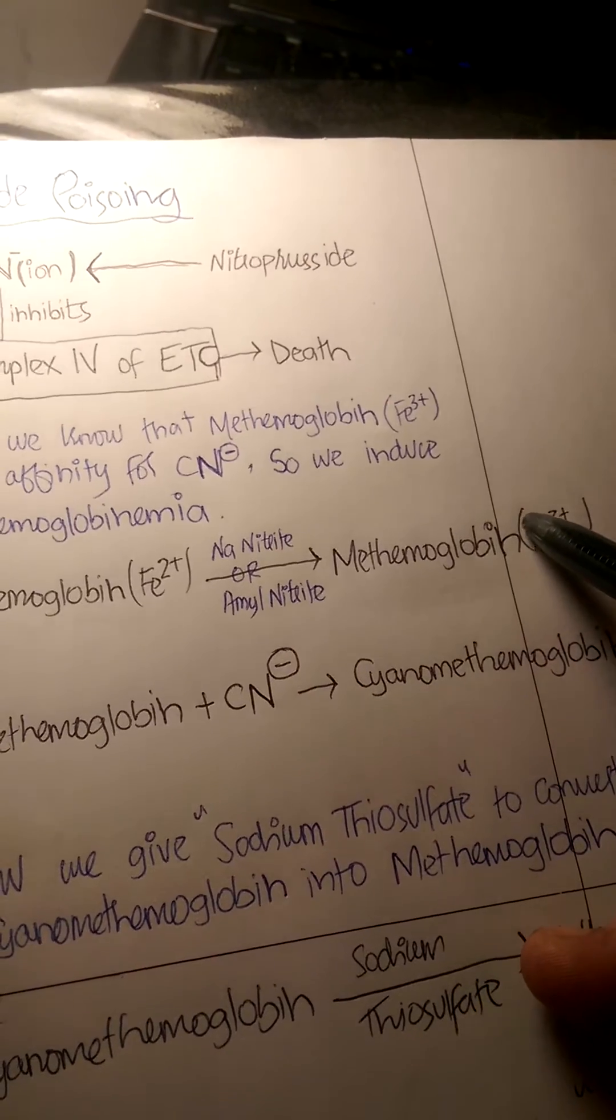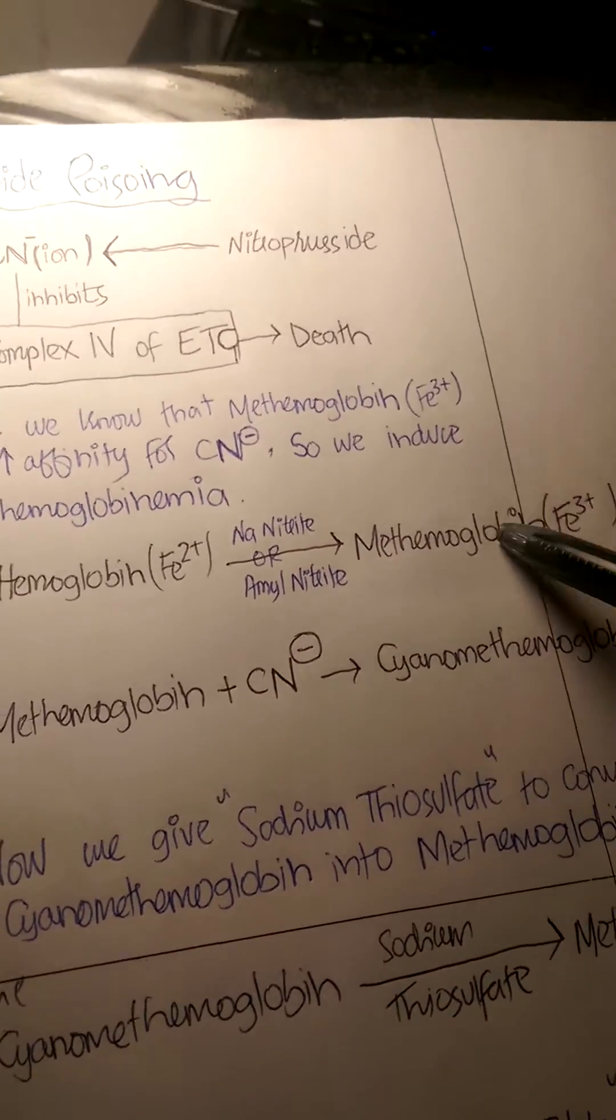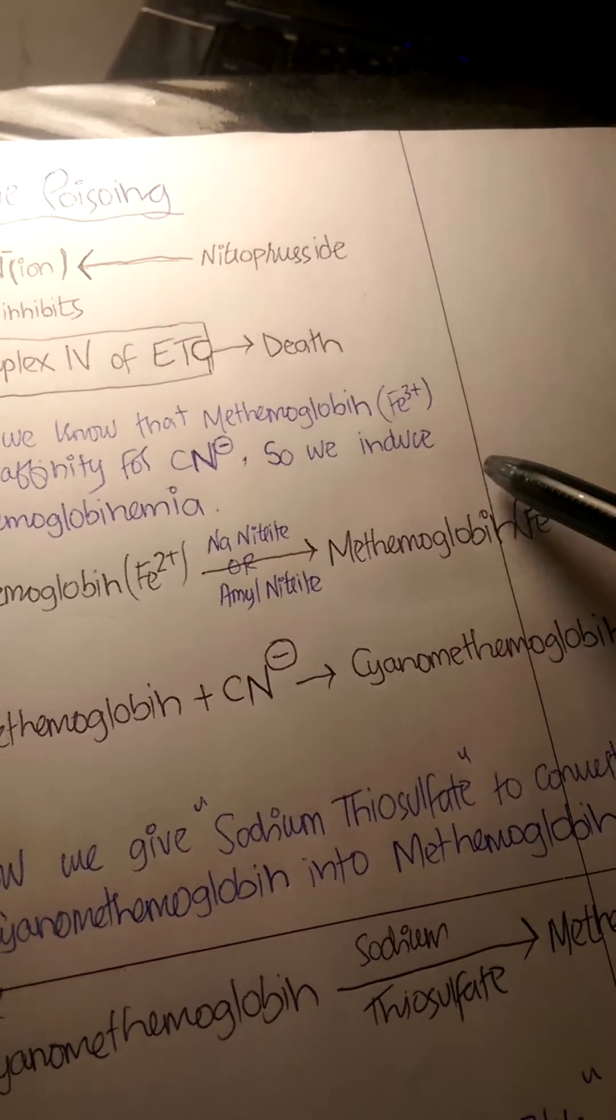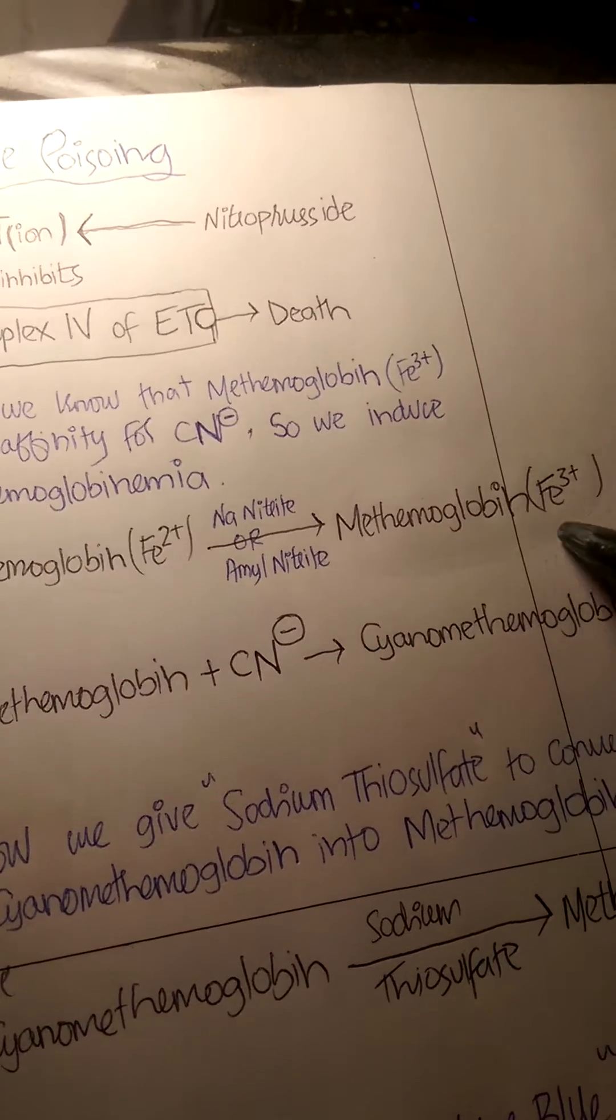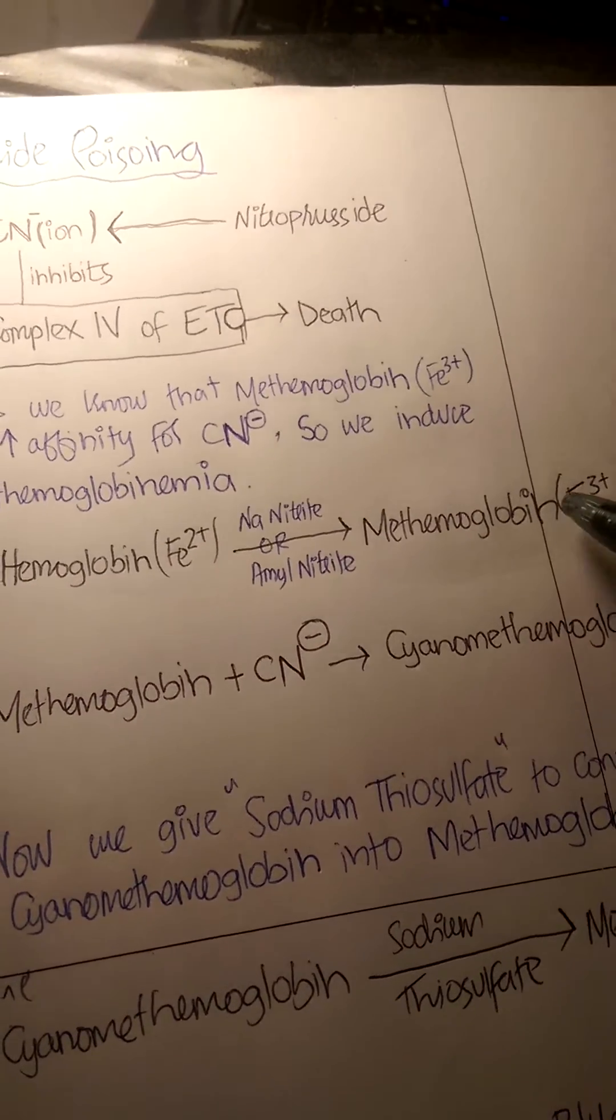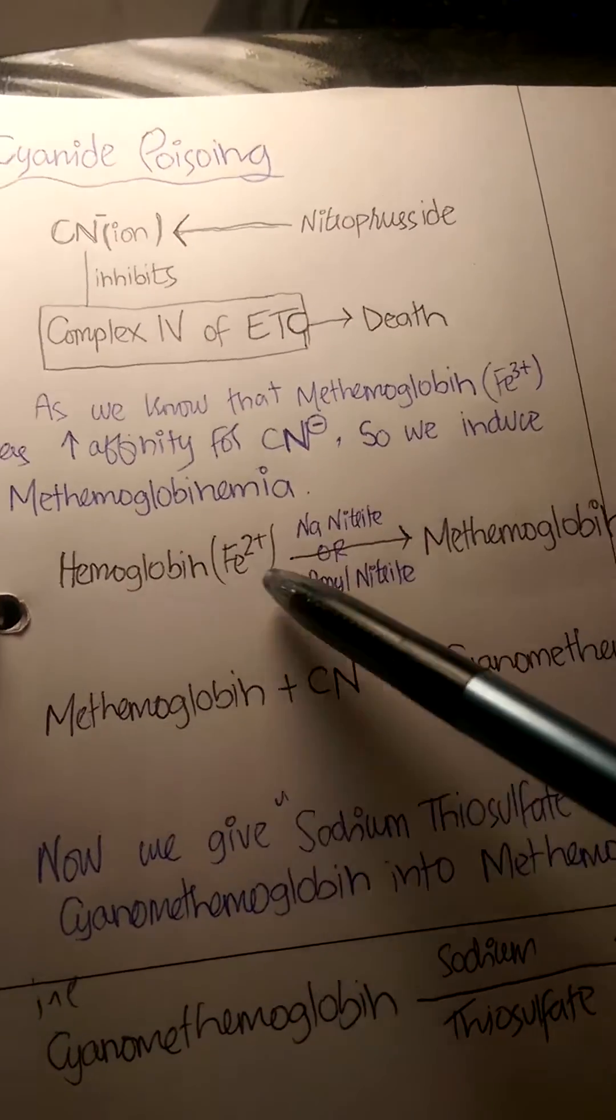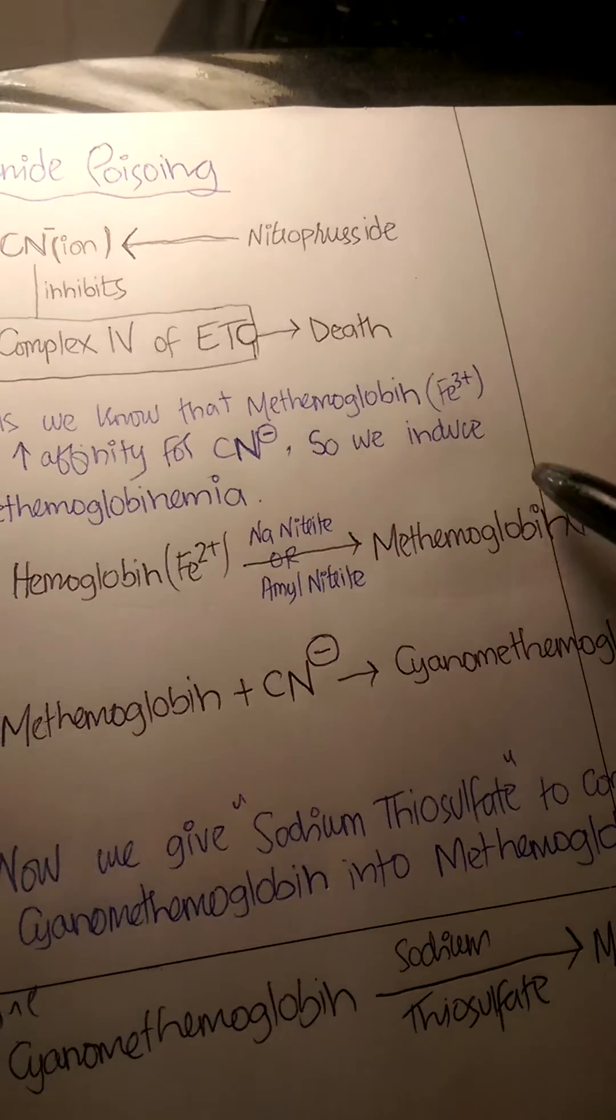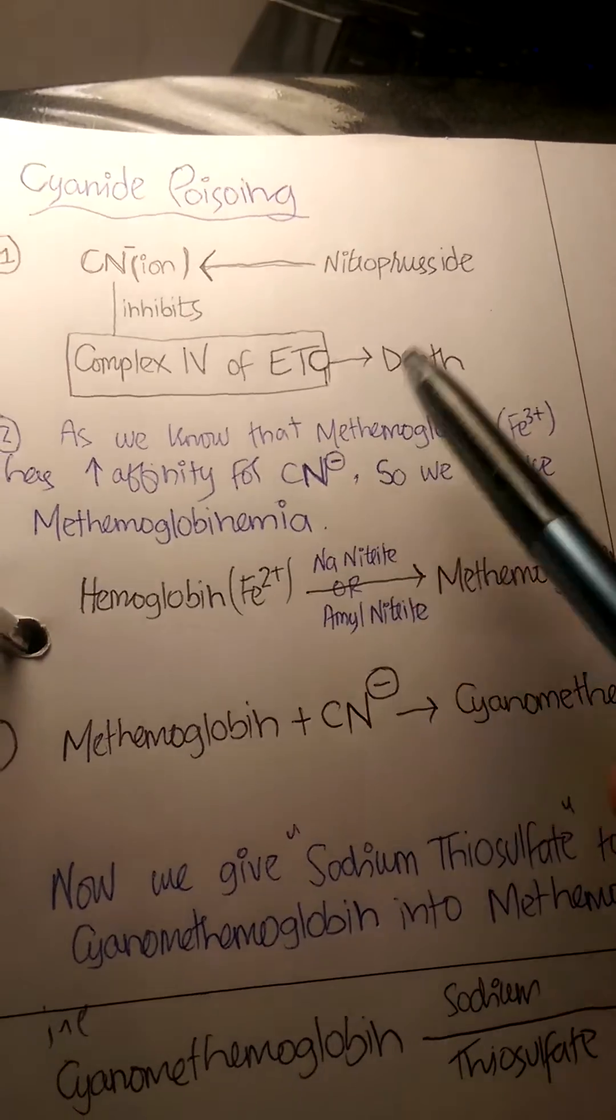We don't like methemoglobin too much because of its decreased ability to bind oxygen. However, there's one beautiful thing about methemoglobin: it has an increased ability to bind cyanide ions. So when we have cyanide ions inside our body, we induce methemoglobinemia. As we know, methemoglobin has an increased affinity for cyanide ions, so we induce methemoglobinemia.